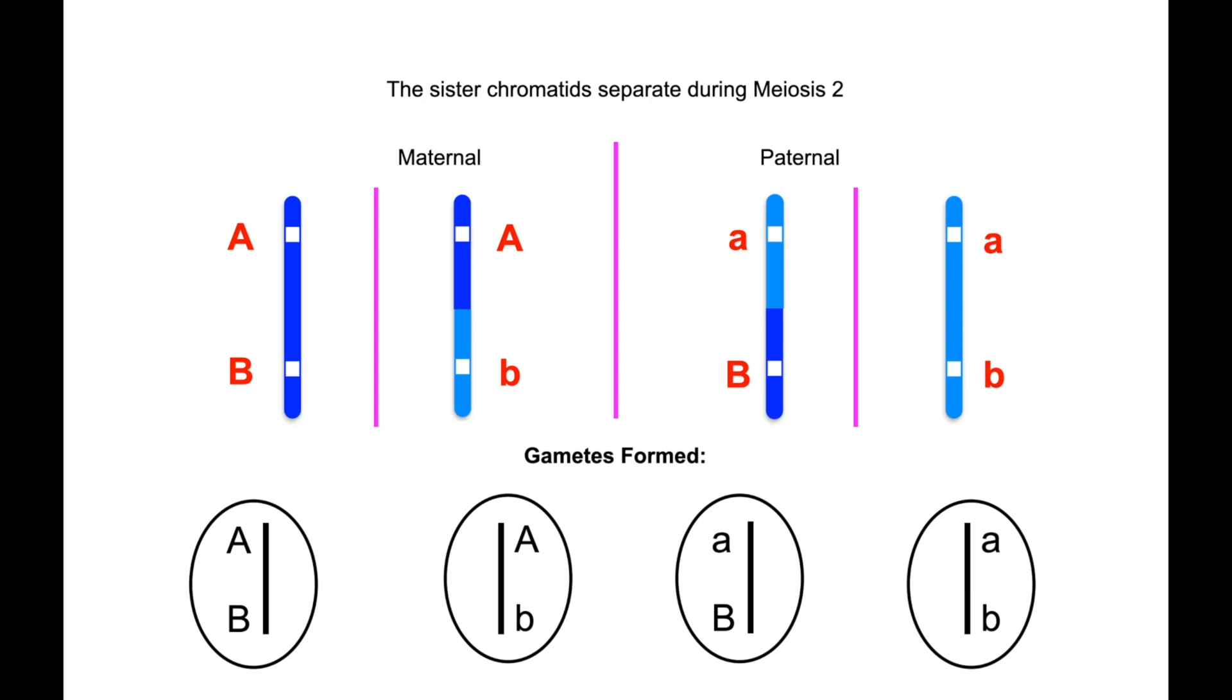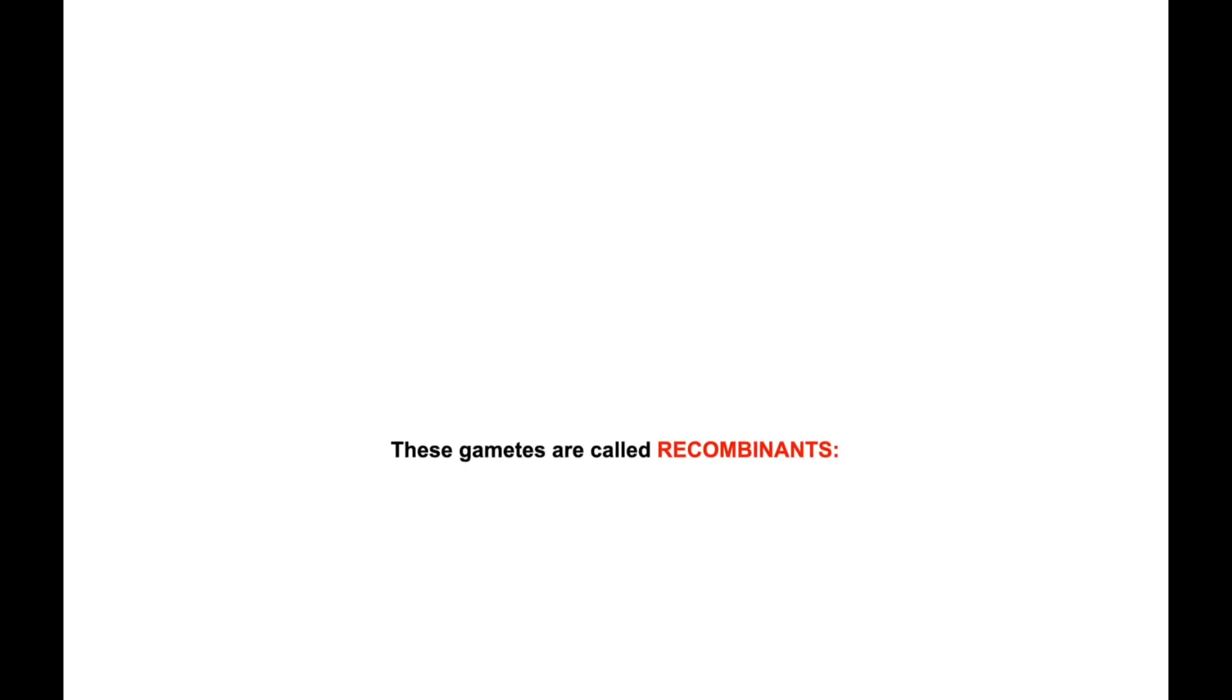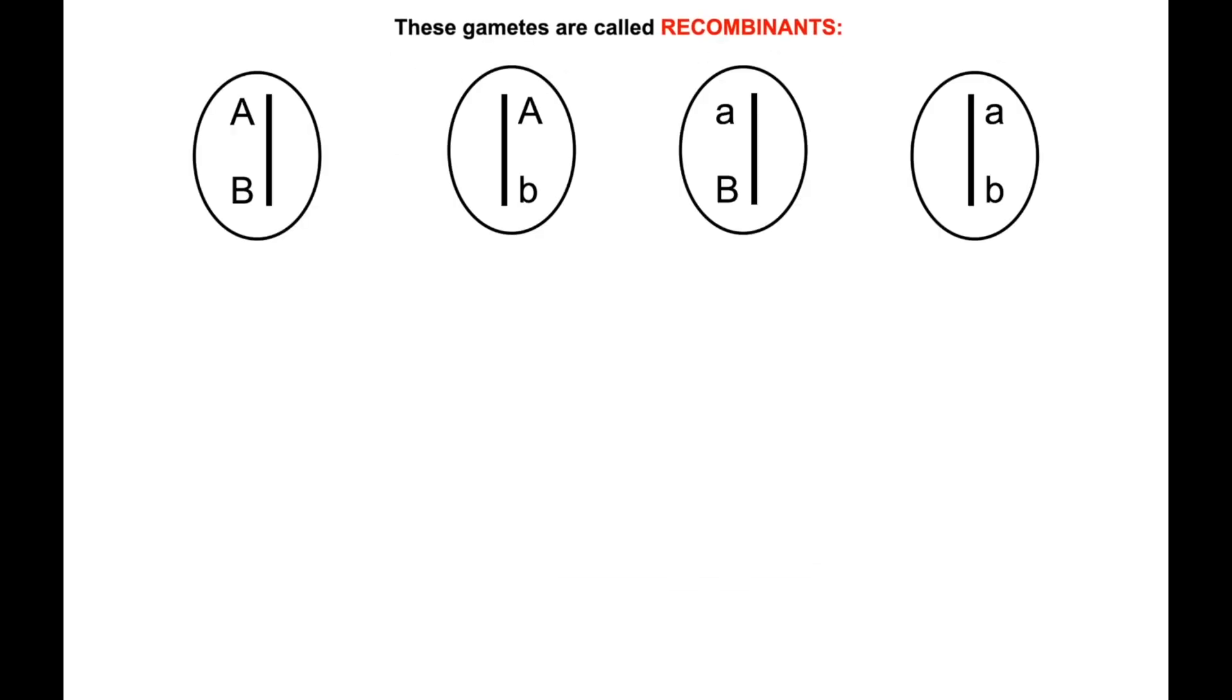Observe the two gametes in the middle. Those two gametes in the middle are as a result of recombination. These gametes are called recombinants because they occurred as a result of recombination.